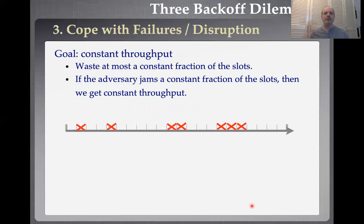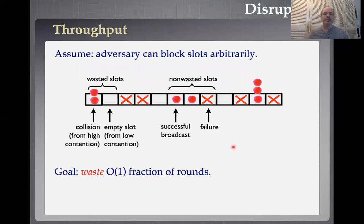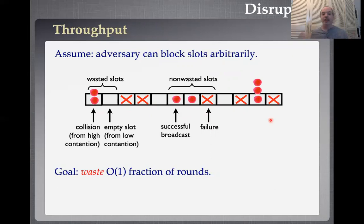Our goal is to waste at most a constant fraction of the useful slots. We want to successfully use a constant fraction of our channel. These are some wasted slots: a collision is a wasted slot, an empty slot is a wasted slot. A slot where the adversary jams is not wasted — we couldn't do anything about it. We want to make sure we waste only a constant fraction of the slots. If jamming is reasonably low, we'll do pretty well. Obviously if noise blocks all our slots, there's nothing we can do — we're doing the best we can. So our goal is to come up with a protocol that achieves all three simultaneously: good throughput, minimal number of attempts, and tolerance of disruption.